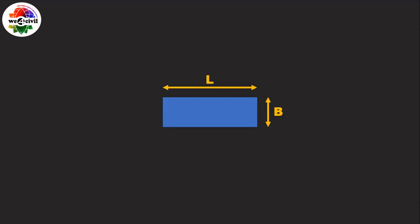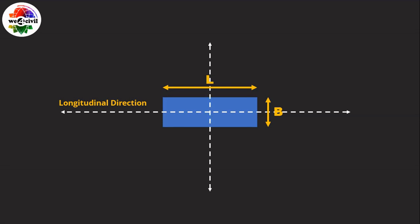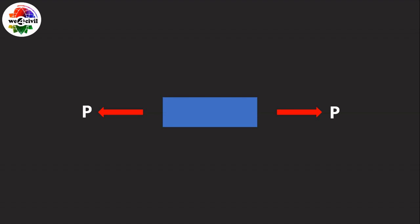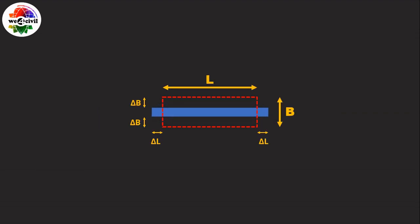Let's have a two-dimensional figure for simplicity with the same length and same breadth. The direction in which we apply the force is known as the longitudinal direction, and the direction perpendicular to the longitudinal direction is known as the lateral direction. When we apply a tensile force P to the bar, the bar undergoes deformation — it elongates in the longitudinal direction and contracts in the lateral direction.